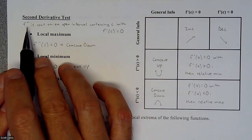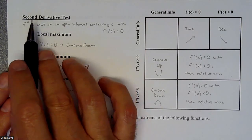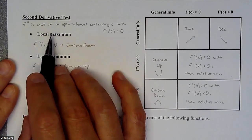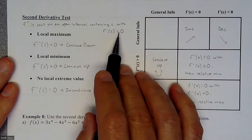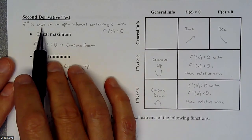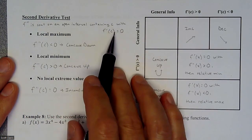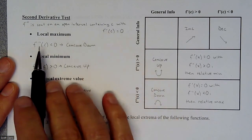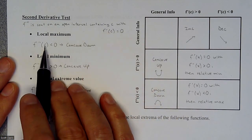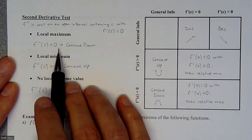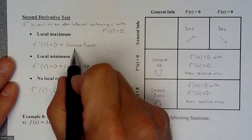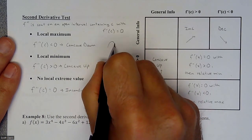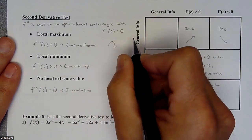Here's the idea: if we do the first derivative, set it equal to zero, and get our critical points, our second derivative is going to tell us whether we have maxes and minimums at those critical points. If the second derivative is continuous on an open interval containing a critical point where the first derivative is zero, and we plug that critical point into the second derivative, we get either a positive, negative, or zero value. If it's negative, we have a concave down situation at that critical number, which means with a slope of zero it had to have been a maximum.